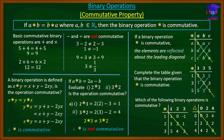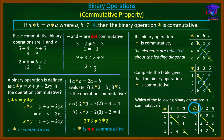For the second table: cover the leading diagonal and reflect the elements. The elements are nicely reflected about the leading diagonal, so we conclude this binary operation is commutative. To summarize: the first table gives a non-commutative operation and the second gives a commutative operation.